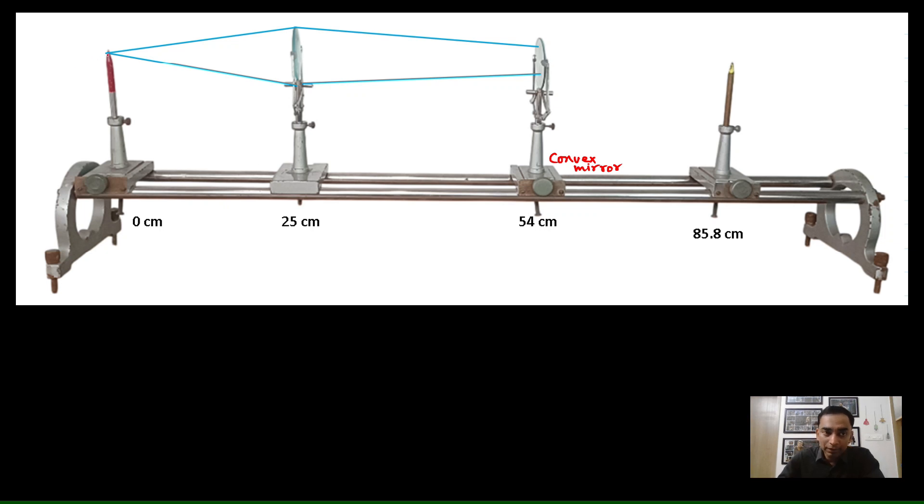Now, why trial and error method? That is very much important for us to understand that two rays came from here. Now those two rays are going to fall on the, after converging from the lens, they are going to fall on the mirror. Now, if they fall exactly perpendicular to the mirror, that means these incident rays will retrace its own path. And finally, the image of the red pin will be formed exactly over it.